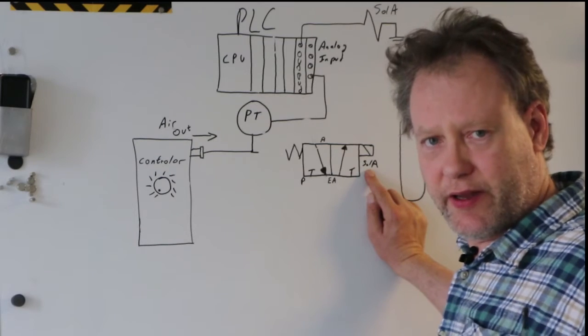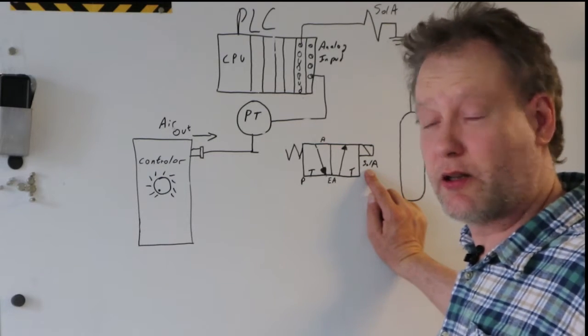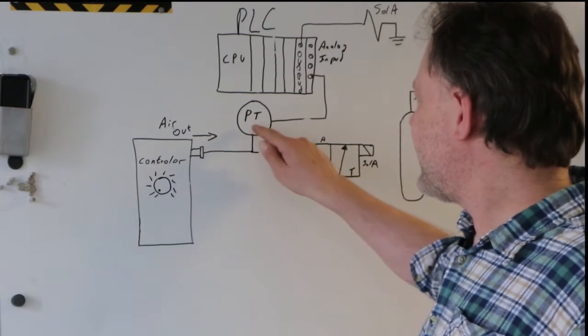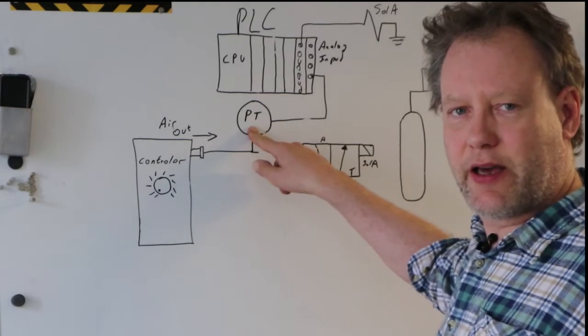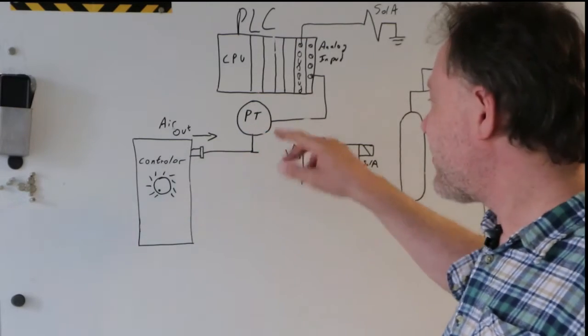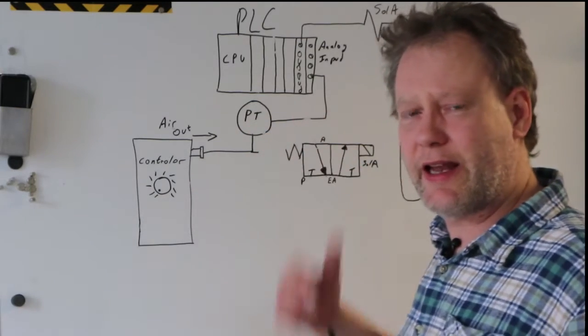But anyway, the PLC is doing, in this case, two things. One is it's energizing the solenoid in the valve. That's one thing, energizing and de-energizing that solenoid. And the other is that it's getting the information from this guy. So essentially that's your pressure information coming in and it's a transducer.